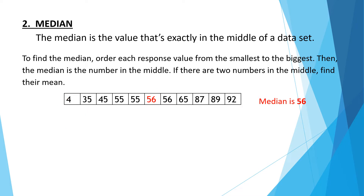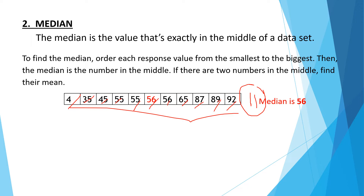When the number of data is odd — like 11 — we can simply find the middle value directly, and that is our median. Just like this example: 56 is in the middle, so that's our median.